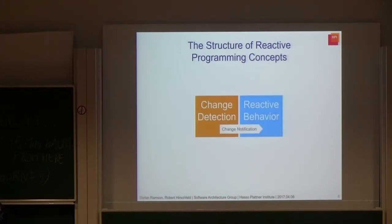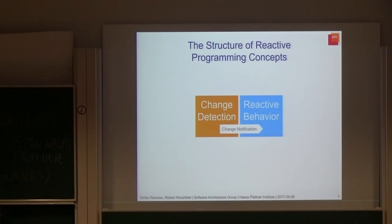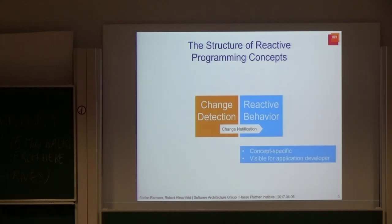The implementation of reactive programming concepts usually consists of two parts: change detection and the reaction to change. Change detection is responsible for monitoring the dependencies for interesting events and state changes. When such a change is detected, the reactive part gets notified. This part then defines how to propagate the change consistently throughout the system.